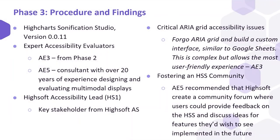Phase 3, the final phase, was a much more informal usability and accessibility evaluation where key stakeholders connected to discuss issues deemed vital to the success of the HSS system. Much of the user feedback was regarding the accessibility of the data table. The team concluded that we ought to forego the conventional ARIA grid and develop a custom in-house platform comparable to what is found on systems such as Google Sheets. Additionally, evaluators recommended the creation of a community forum where users could discuss issues, provide feedback, and pose features they'd hope to see implemented. This phase provided key insights into the strategic implementation of the HSS and how it could reach the broadest user base possible.